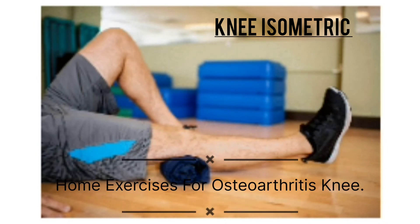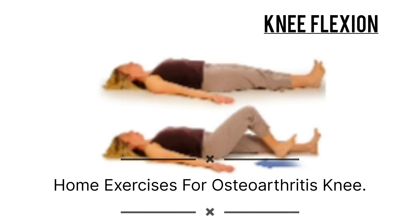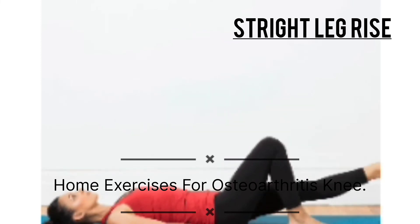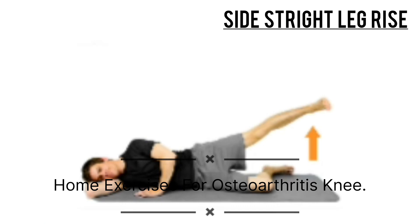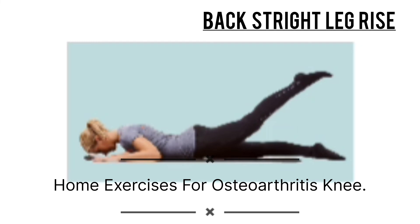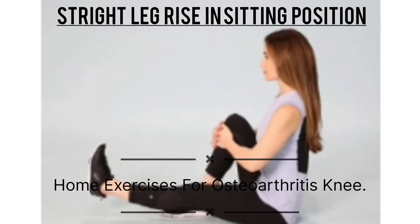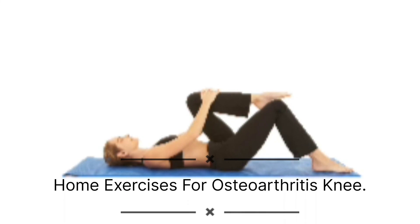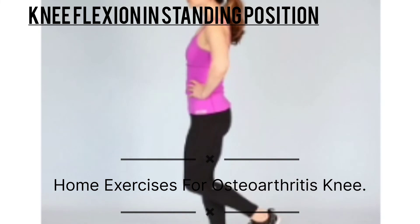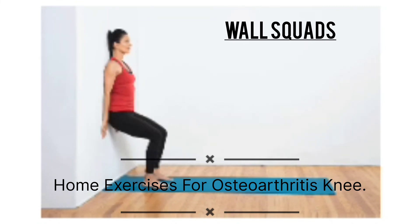Exercise therapy and home exercises include knee isometrics, knee flexion and extension exercise in supine lying position, straight leg raise in supine lying position, straight leg raise in side lying position with one knee bent, back straight leg raise in prone position, and weight leg raise in sitting position with one knee bent.